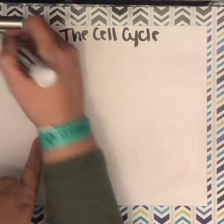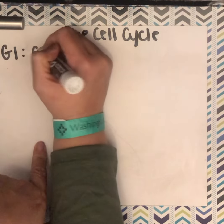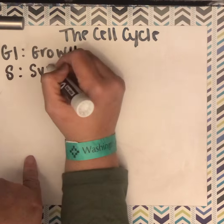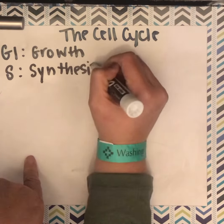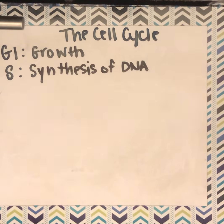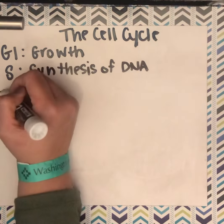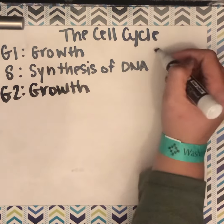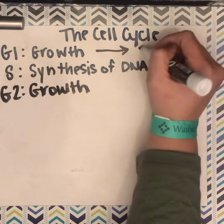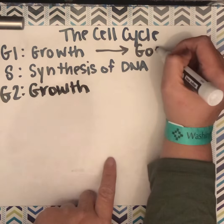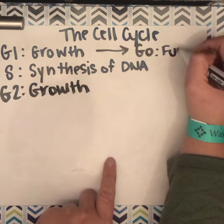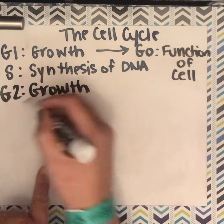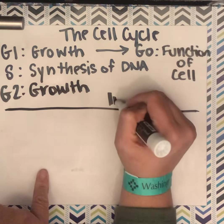So the cell cycle: we've got G1, which is growth; S, which is synthesis of DNA; G2, which is more growth; and sometimes they go to G0 phase, which is just functioning cells — they're not dividing. And all of this together — G1, S, G2, and G0 — is called interphase.